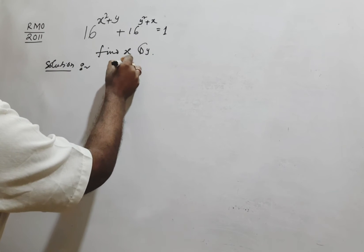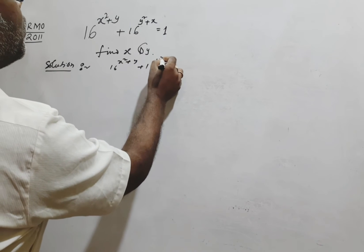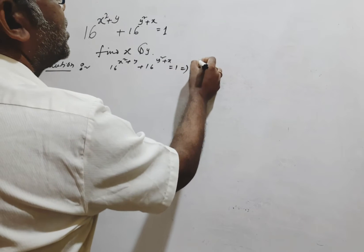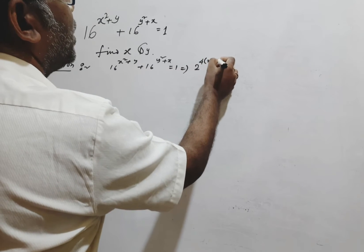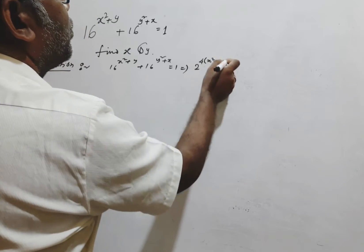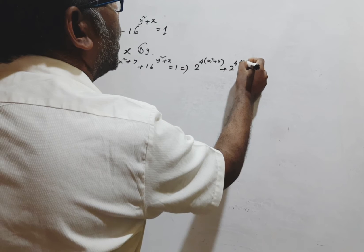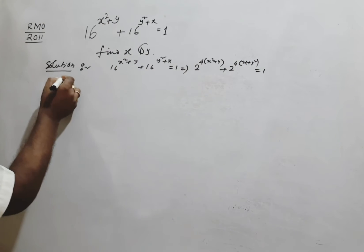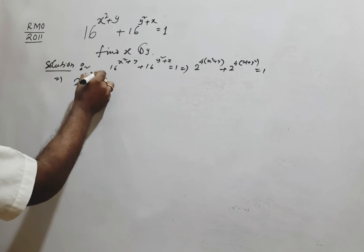We have 16 to the power (x² + y) plus 16 to the power (y² + x) equals 1. This can be expressed as: 16 = 2 to the power 4, so we write 2 to the power 4(x² + y) plus 2 to the power 4(y² + x) equals 1.